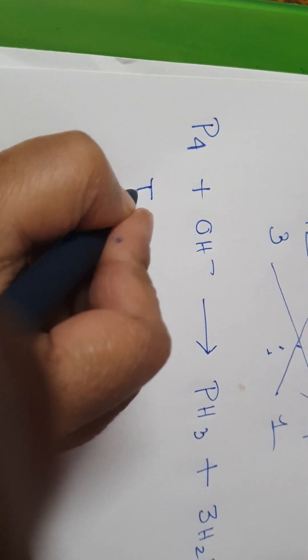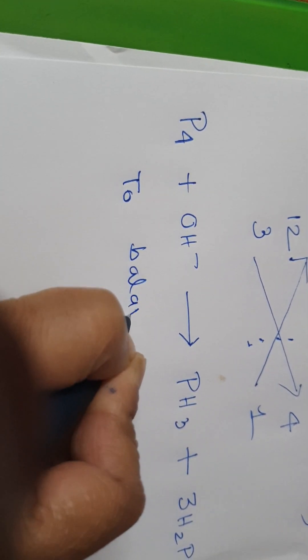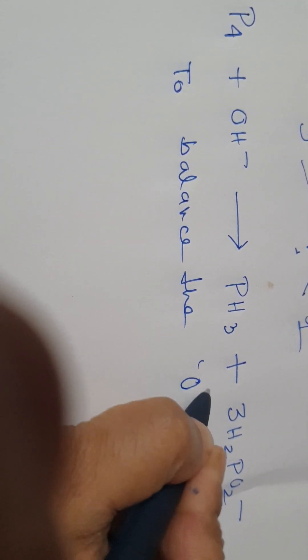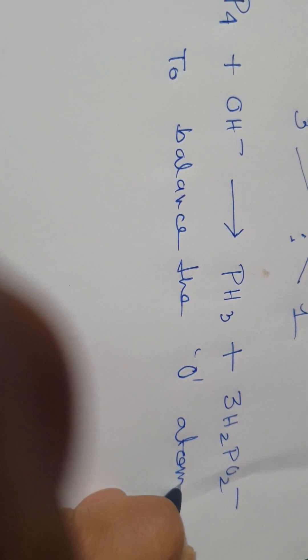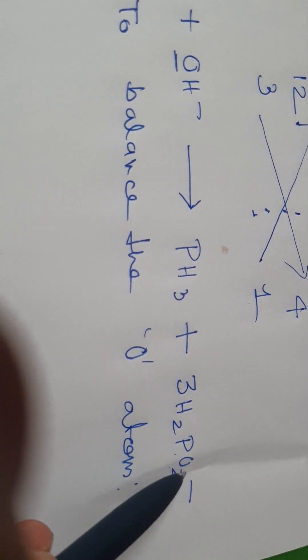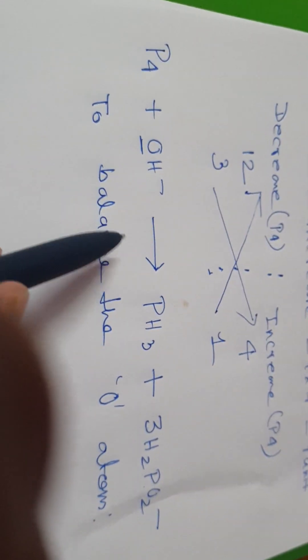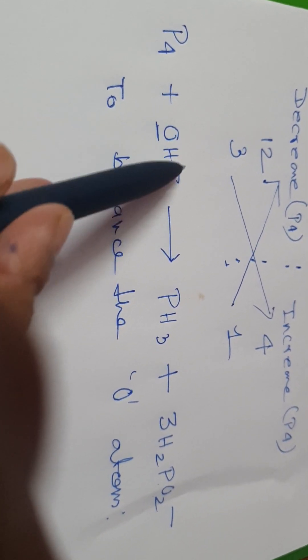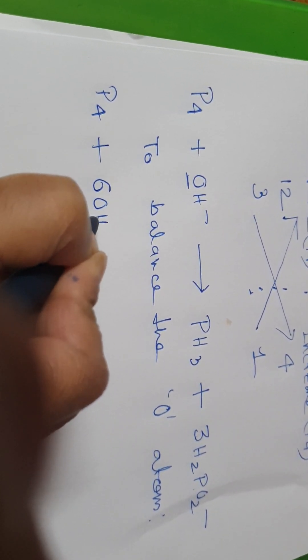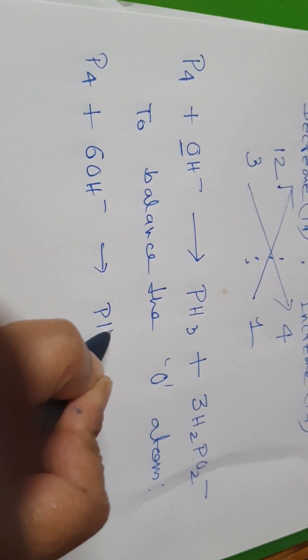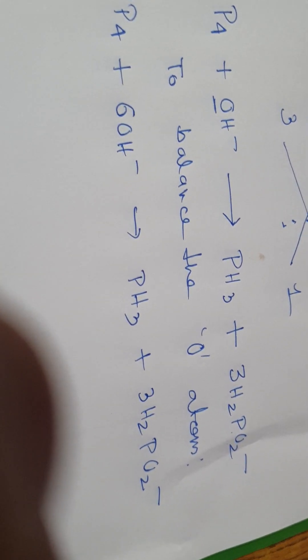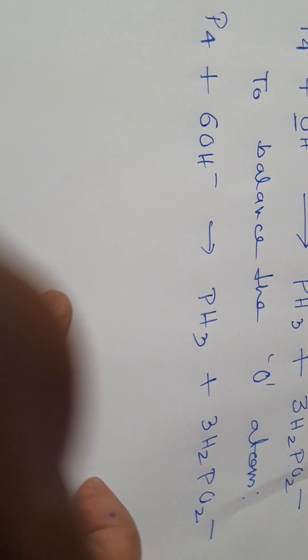Now look. To balance the oxygen atoms. What to do? Here only one oxygen present. Here look, 3 into 2 is 6 oxygen present. Our medium is basic medium. So we have to multiply this OH minus by 6. So look, we are writing: P4 plus 6 OH minus, it will produce PH3 plus 3 H2PO2 minus. Oxygen has been balanced. But what is not balanced yet? Hydrogen is not balanced.